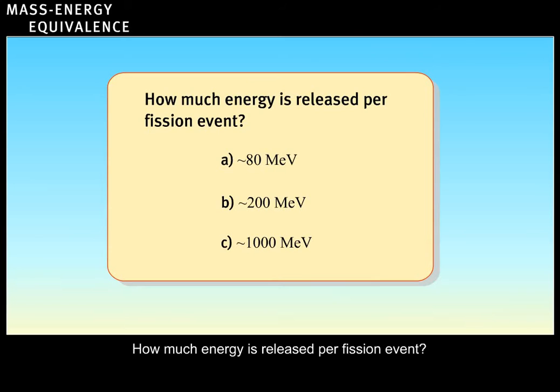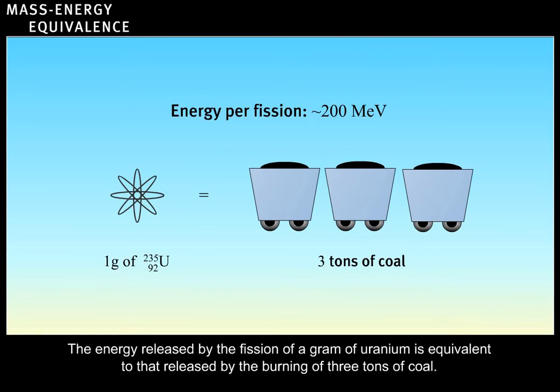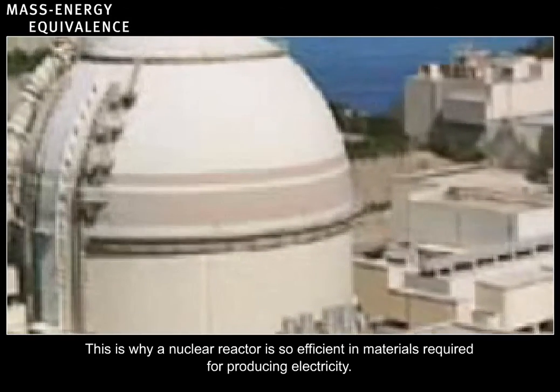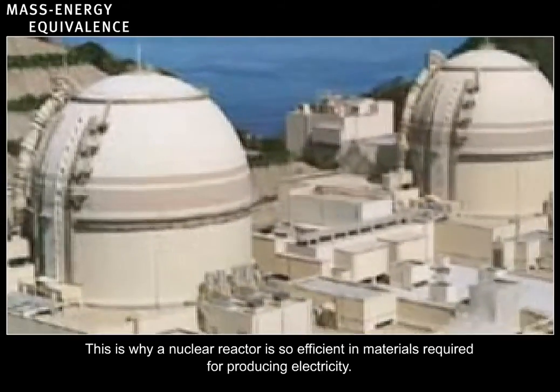How much energy is released per fission event? Correct. The energy released by the fission of a gram of uranium is equivalent to that released by the burning of three tons of coal. This is why a nuclear reactor is so efficient in materials required for producing electricity.